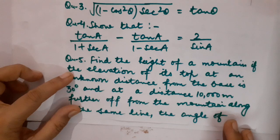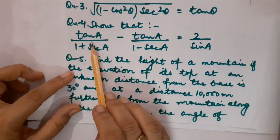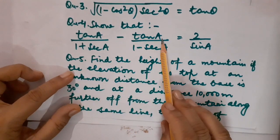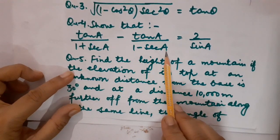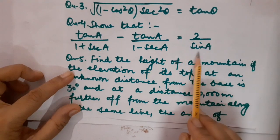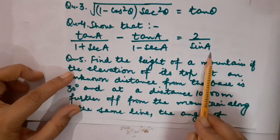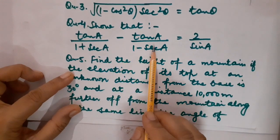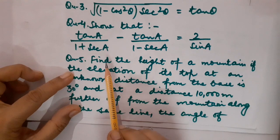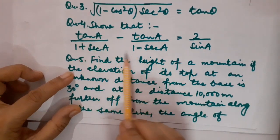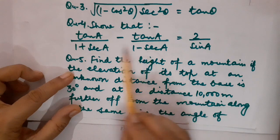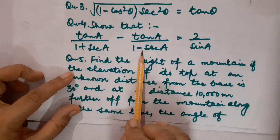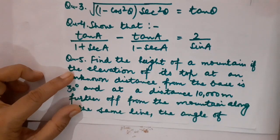Now children, question number 4: show that tan A / (1 + sec A) - tan A / (1 - sec A) = 2 / sin A. You can see the left hand side is in the form of p/q with a minus sign, so these are fractional expressions. To simplify them I definitely have to take the LCM.